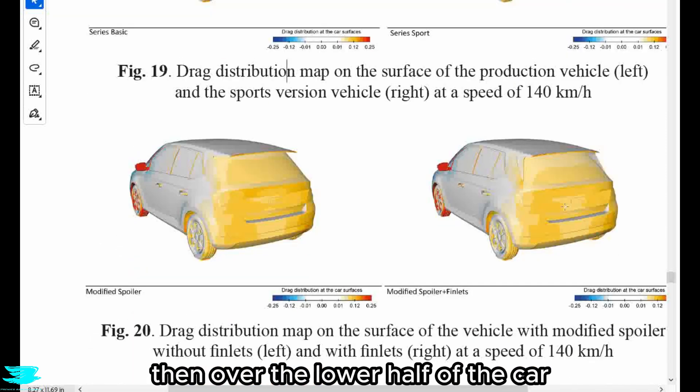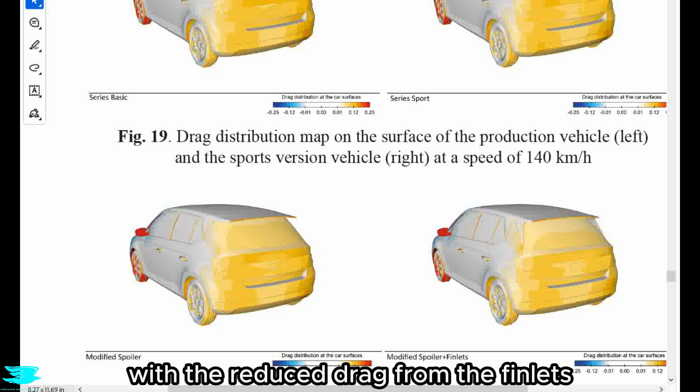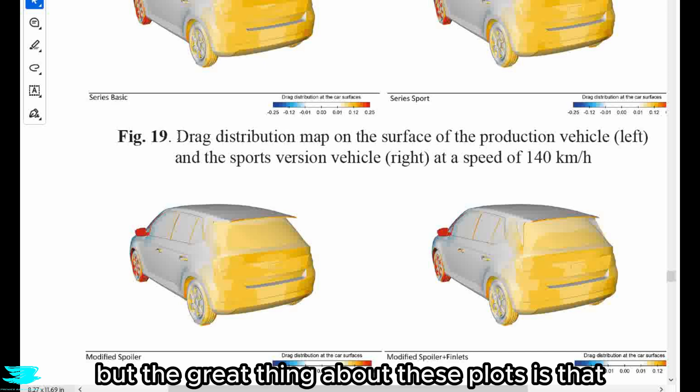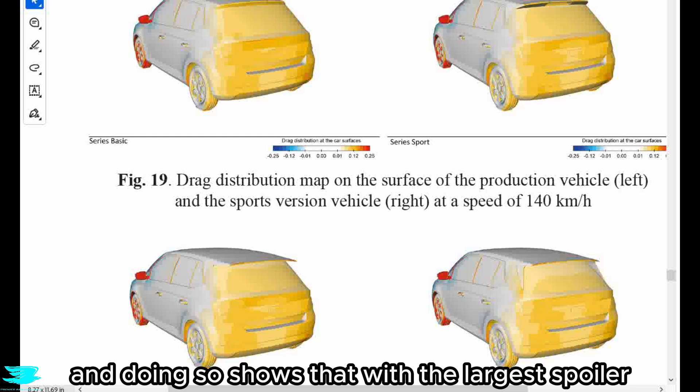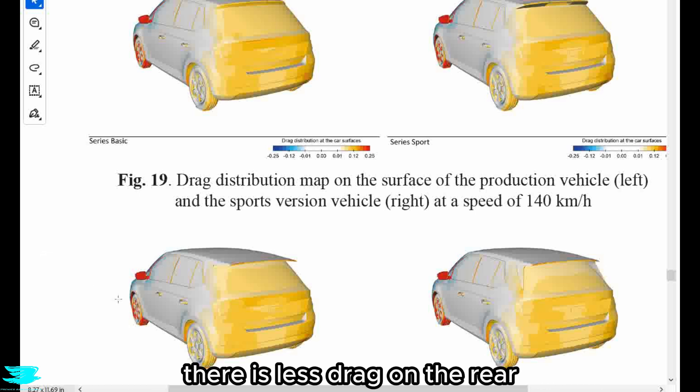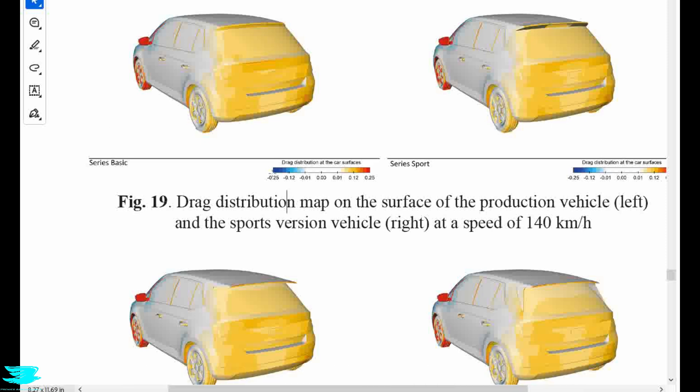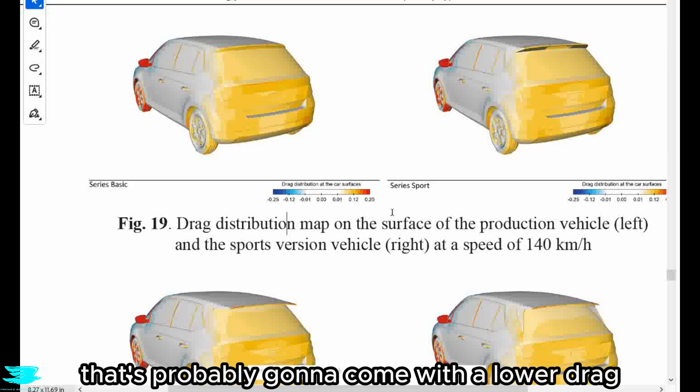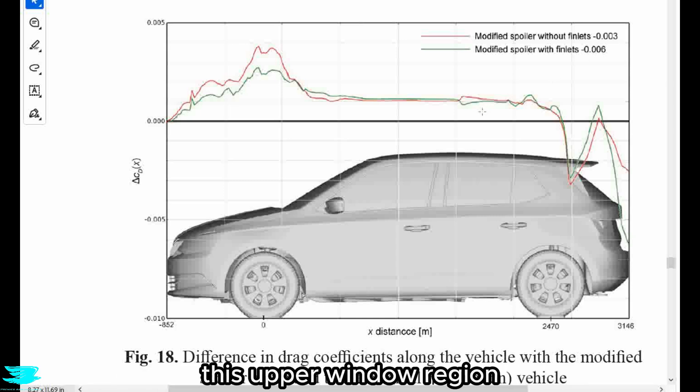Anyway, then over the lower half of the car, really only around the badge area again, do we see appreciable changes with the reduced drag from the finlets. But the great thing about these plots is that we can compare the four together and doing so shows that with the larger spoiler, so the bottom two figures here, regardless of whether we have finlets or not, there is less drag on the rear, especially around the top of the rear window. And that is a massive deal compared to the regular production car. That's probably going to come with lower drag as well, which is perhaps where we're getting this lower drag coefficient coming from too, from this lower window, this upper window region.